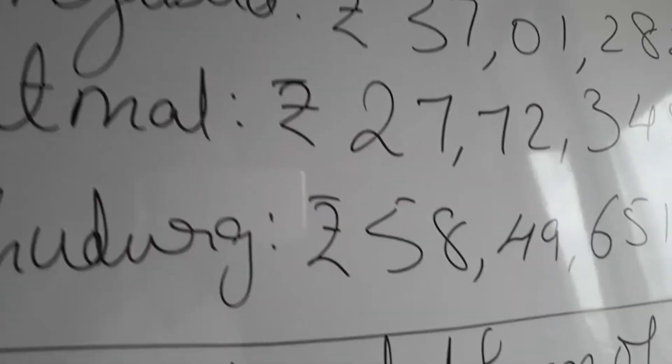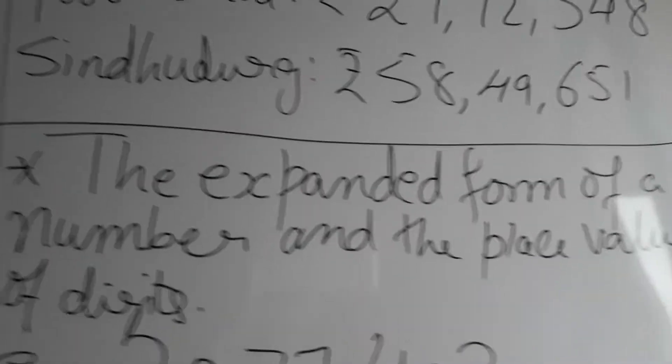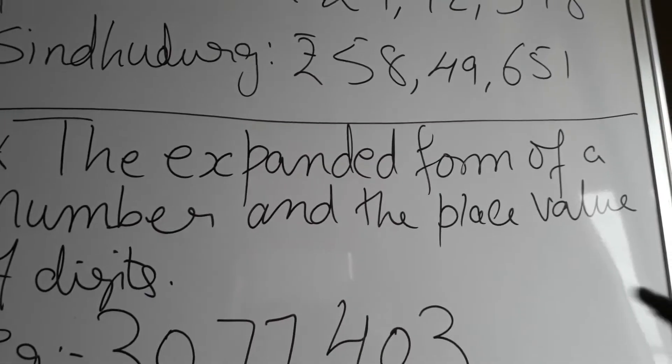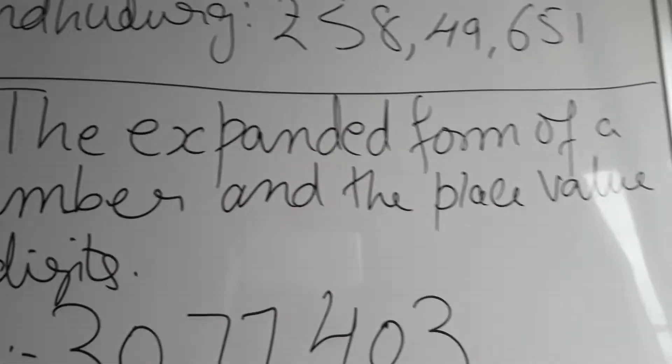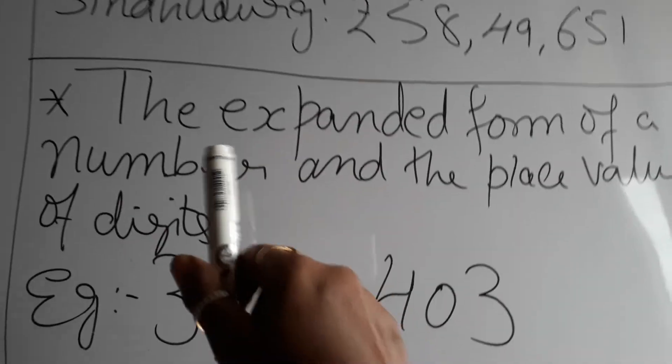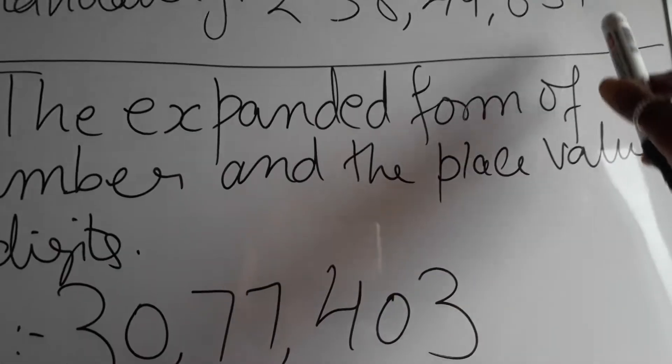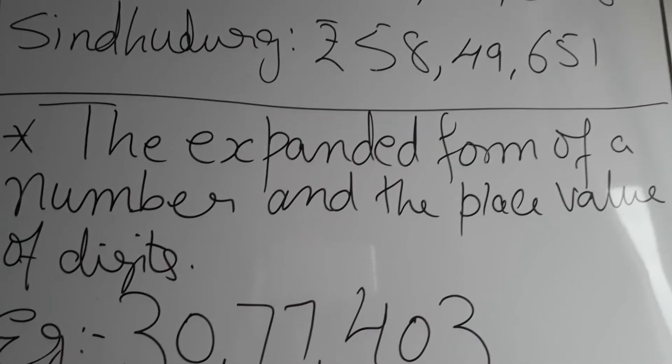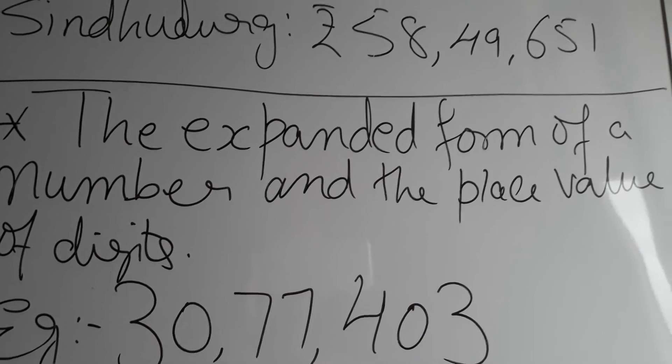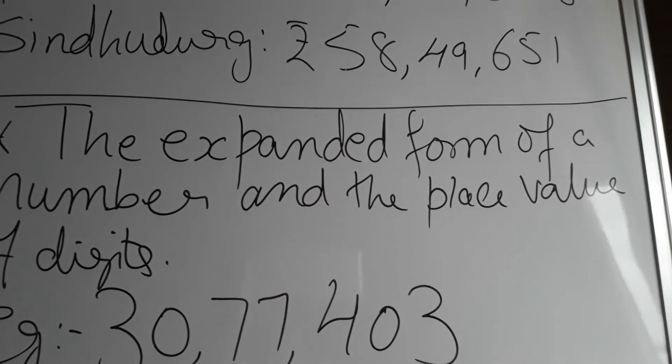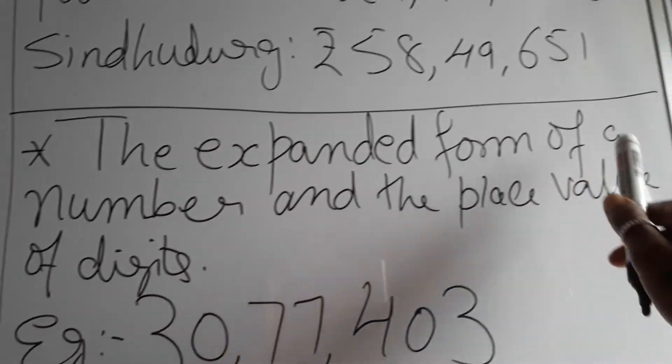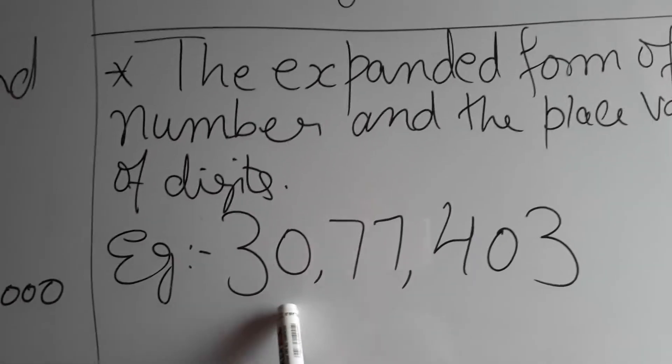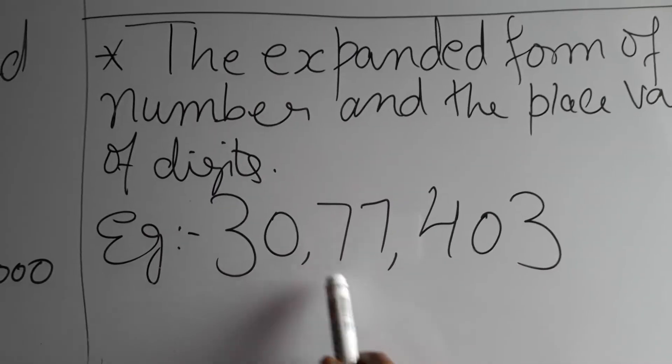Now we go on to how do we expand this number. Expand means to stretch. You all know what is expand - just like a rubber band when you pull it, we expand. So all these numbers, how do we write their expanded form? The expanded form of a number and the place value of digits. Place value - where is it? Units place, tens place. Like for example, you are sitting on the first bench or last bench - that's your place where you are seated. That's the place value. Expanded form of a number and the place value of digits.